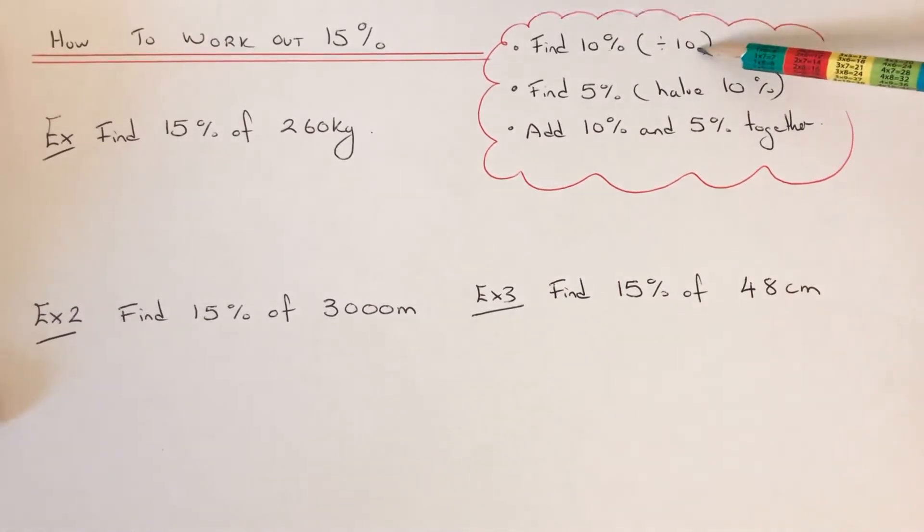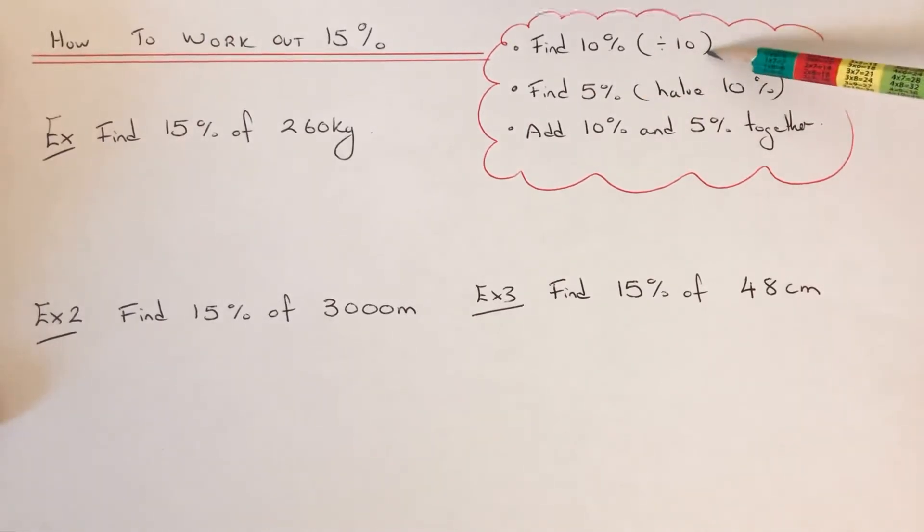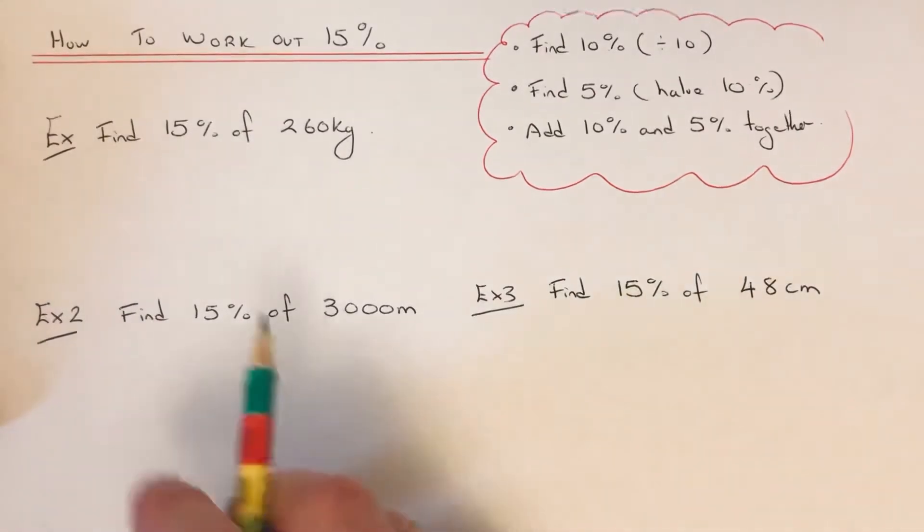dividing the number by 10. Then you work out 5% by halving the 10% amount. Then you add the 10% and 5% amounts together to give you 15%. Let's have a look at